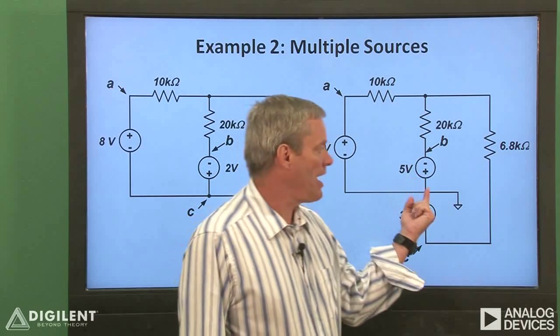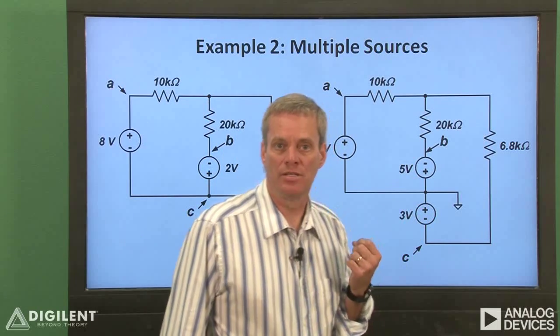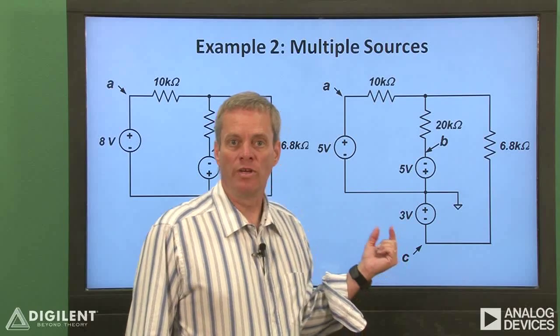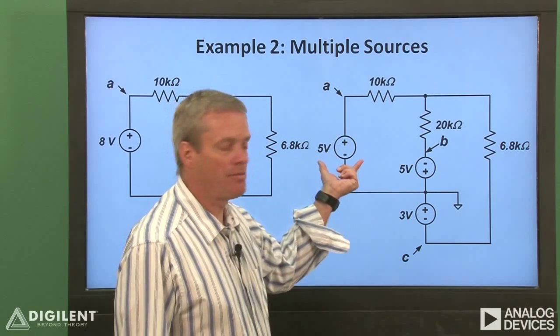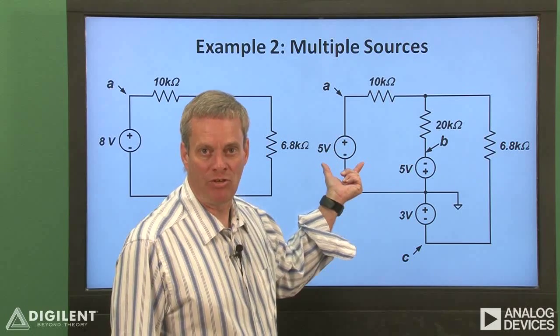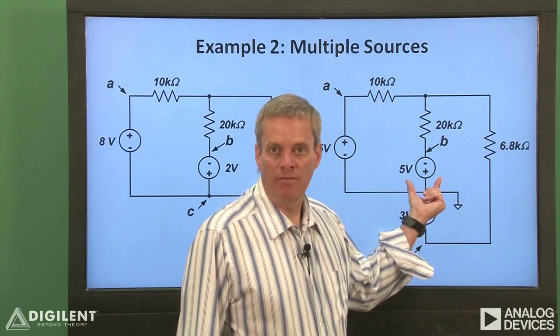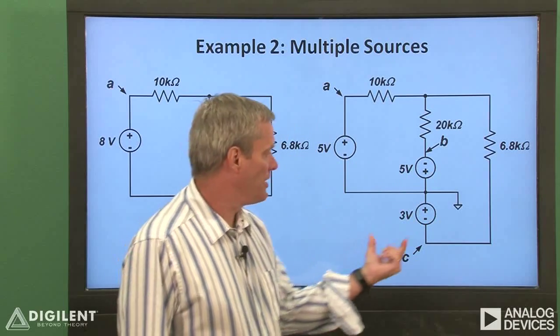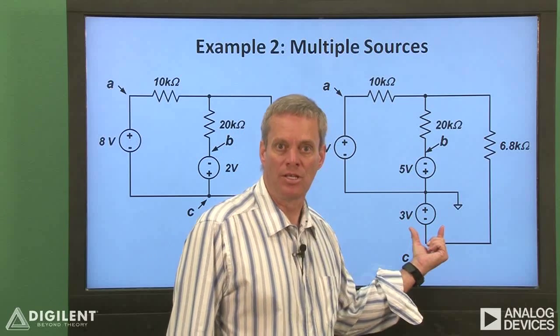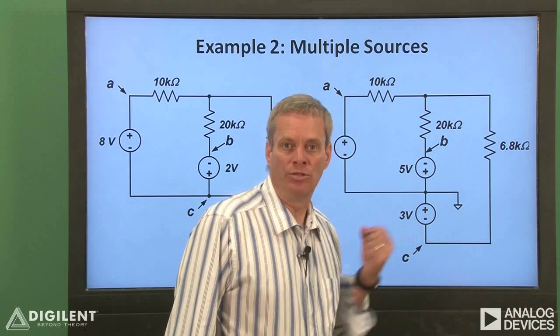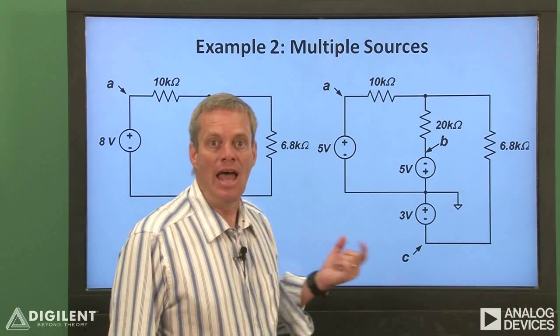Particularly notice where the analog discovery's ground is placed. With this placement of ground, we can use V plus to implement the positive 5 volt source relative to ground, V minus to implement the negative 5 volt source relative to ground, and one of the waveform generator channels to implement a negative 3 volt source relative to ground.